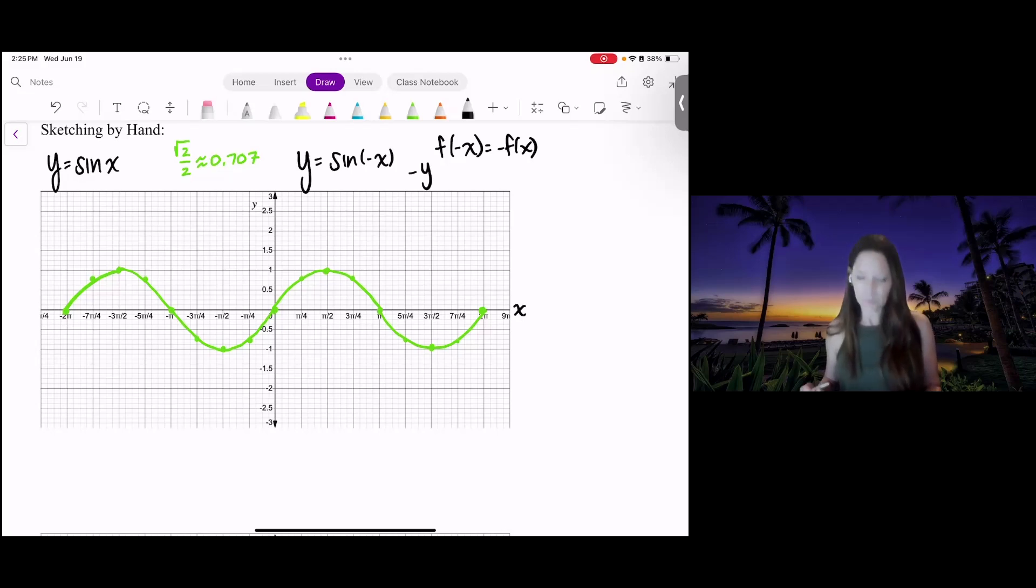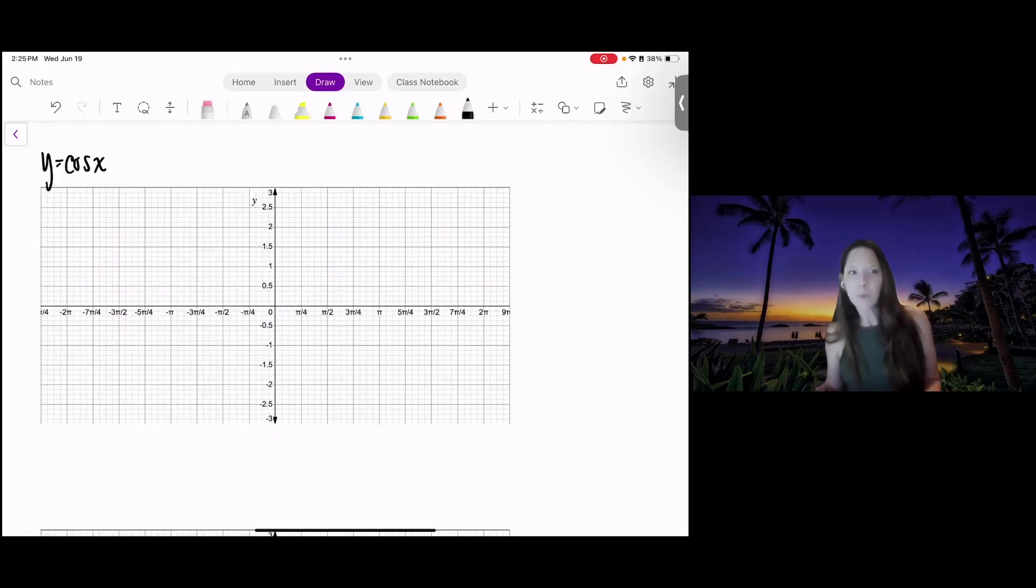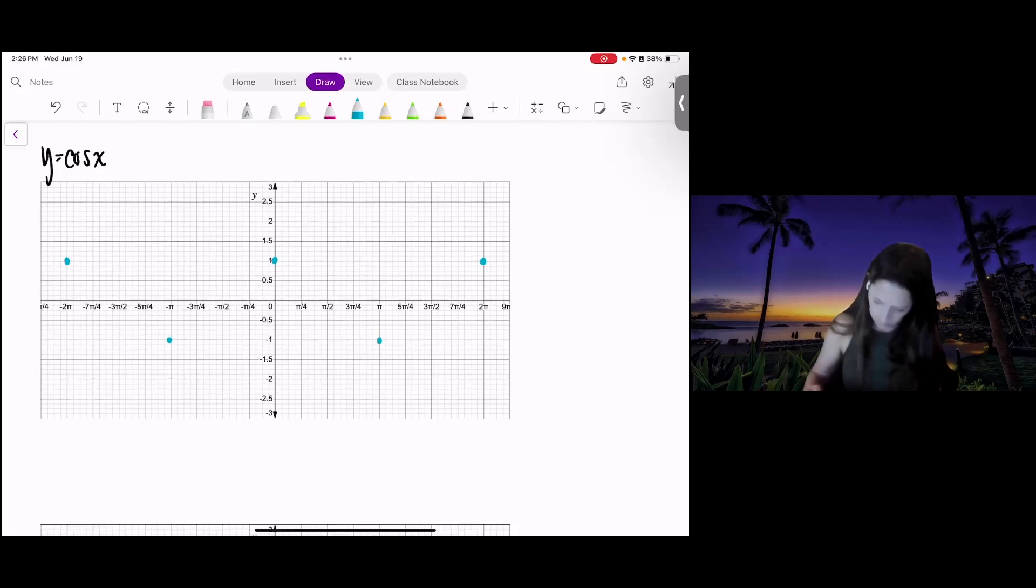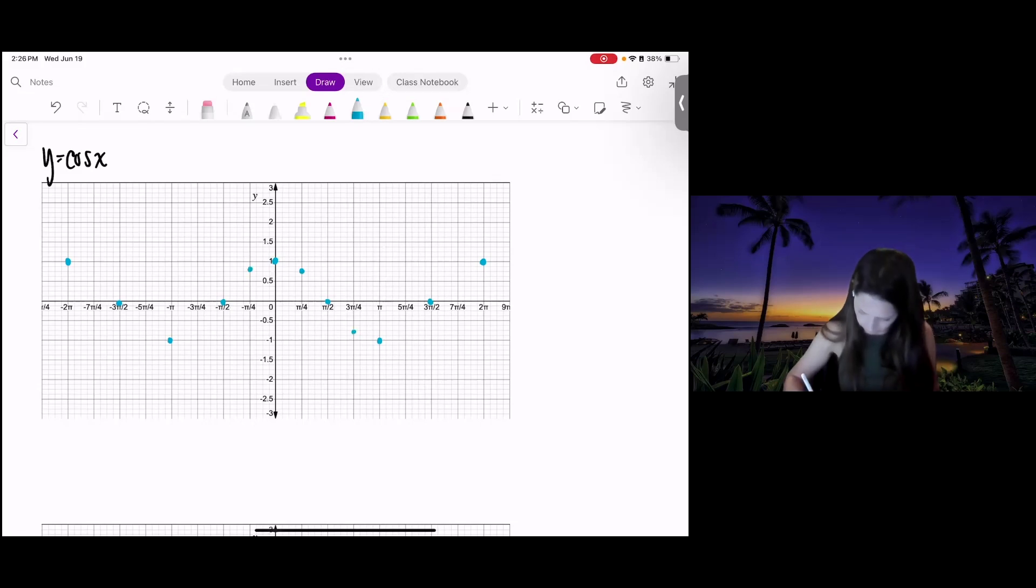Let's look at cosine now. Cosine is pretty similar to sine, but remember, they take on the same values, but just in different places.